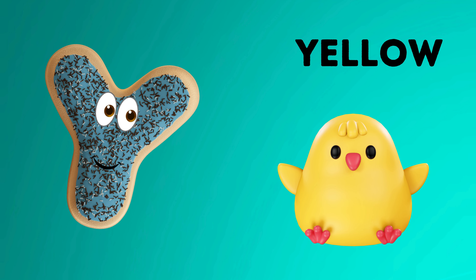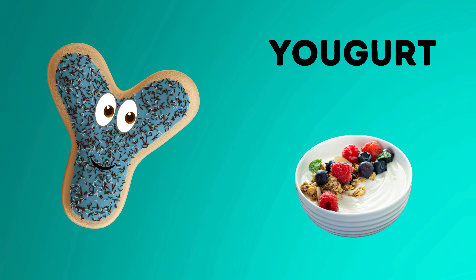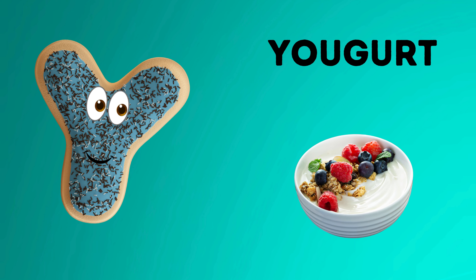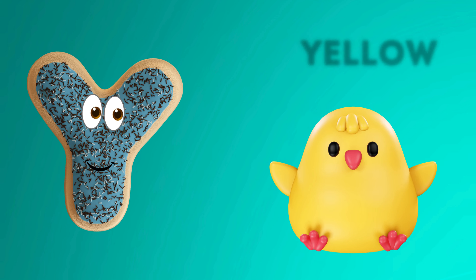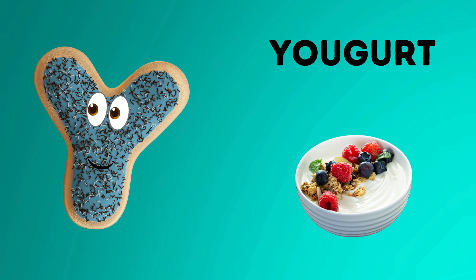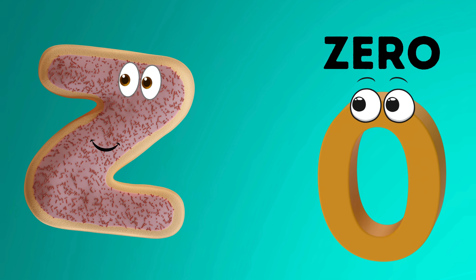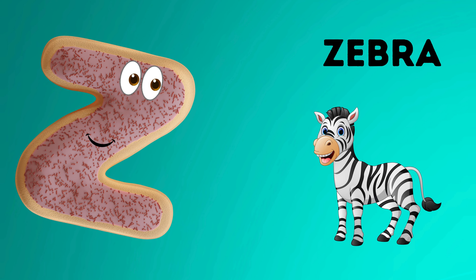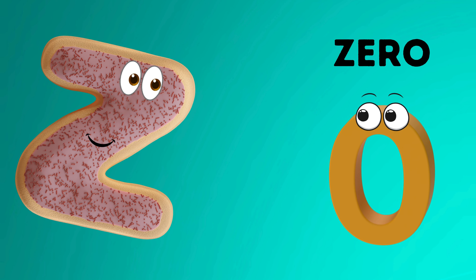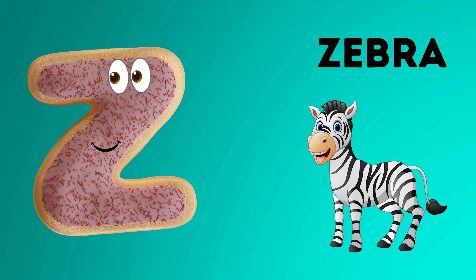Y is for yellow, y-y-y-yellow. Y is for yogurt, y-y-y-yogurt. Y is for y-y-y-y-yellow. Y is for y-y-y-y-yogurt. Z is for zero, z-z-z-zero. Z is for zebra, z-z-z-zebra. Z is for z-z-z-z-zero. Z is for z-z-z-z-zebra.